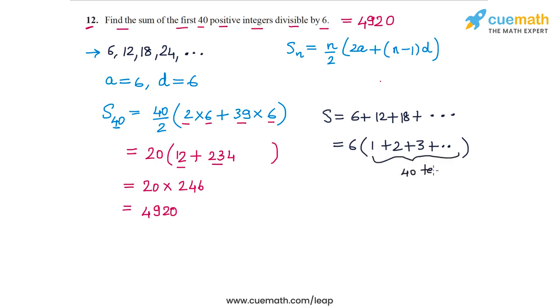We know how to calculate the sum of the first n natural numbers. The sum of the first n natural numbers is n(n+1)/2. This means that this sum inside the bracket will be equal to 40, which is n, into 41 (n+1) by 2. So this is what we get as the sum of the first 40 positive multiples of 6.